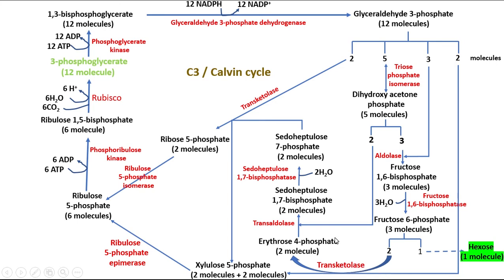Erythrose-4-phosphate combines with dihydroxyacetone phosphate in the presence of transaldolase to form sedoheptulose-1,7-bisphosphate. After dephosphorylation, it converts into sedoheptulose-7-phosphate. Two molecules of sedoheptulose-7-phosphate react with two molecules of glyceraldehyde-3-phosphate to produce xylulose-5-phosphate and ribose-5-phosphate via transketolase. Ribose-5-phosphate converts to ribulose-5-phosphate by ribulose-5-phosphate isomerase. Xylulose-5-phosphate also converts to ribulose-5-phosphate by ribulose-5-phosphate epimerase.